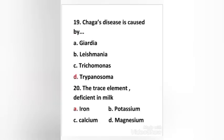Next question: Chagas disease is caused by — Giardia, Leishmania, Trichomonas, or Trypanosoma? The right answer is option D — Chagas disease is caused by Trypanosoma. Chagas disease, also known as American trypanosomiasis, is a tropical parasitic disease caused by Trypanosoma cruzi.